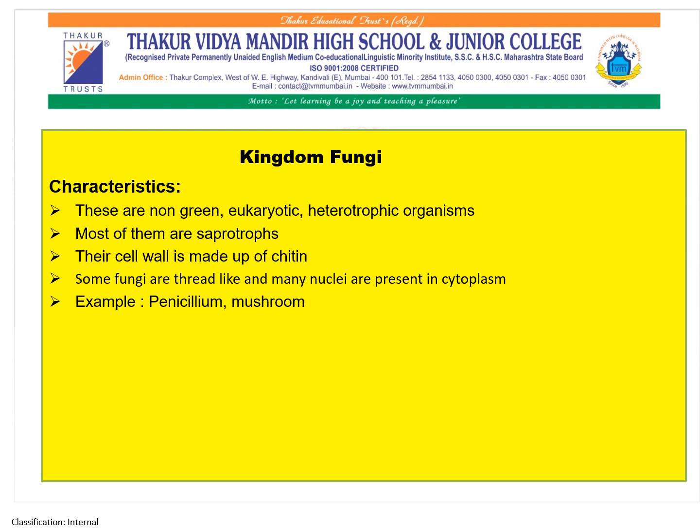Kingdom Fungi are non-green eukaryotic heterotrophic organisms. Most of them are saprotrophs — organisms which derive their nutrition from dead organisms. Their cell wall is made up of chitin. Some fungi are thread-like and many nuclei are present in the cytoplasm. Examples are Penicillium and mushroom.